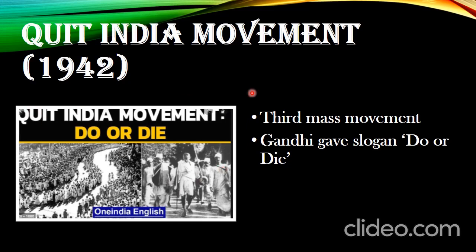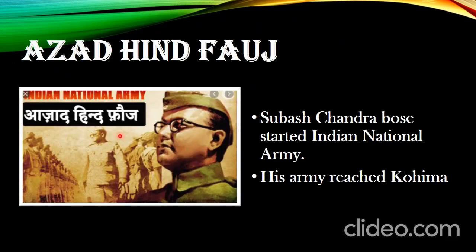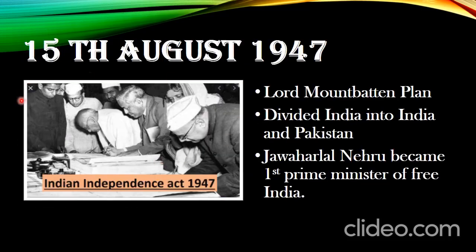The movement continued till independence. Additionally, the Indian National Army, proposed by Netaji Subhas Chandra Bose, made it even harder for the British to control the people. The Indian National Army was started by Subhas Chandra Bose, and it gathered a lot of soldiers from India and marched till Kohima. Netaji then went to Burma and Japan to collect support, but the plane crashed and he died. The army collapsed, but it gave a great result — pressuring the British to move towards granting independence.